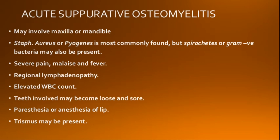The features of acute suppurative osteomyelitis include involvement of maxilla or mandible, though spread in the mandible is wider. The infection is of mixed nature, and patients present with constitutional symptoms like high intermittent fever, malaise, nausea, vomiting, and anorexia. There is regional lymphadenopathy and elevated WBC count. Teeth are tender to percussion and loose. Increased pressure from local edema in the inferior alveolar canal can cause paresthesia or anesthesia of the lip. Trismus may also be present.